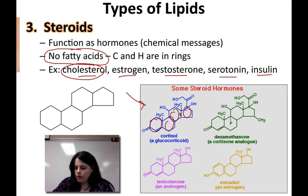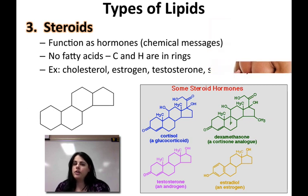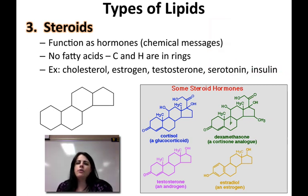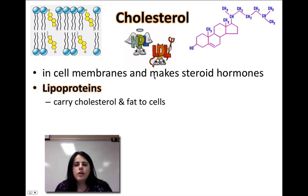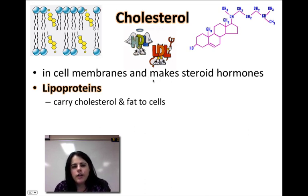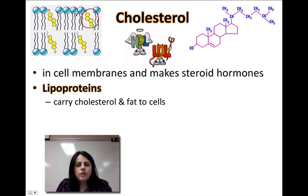Most of the time we think of steroids as anabolic steroids to build muscles, but that's only one type — there are many others inside your body, and that main one is cholesterol. Cholesterol is actually found in your cell membranes and makes all the other hormones. Cholesterol is a lipid, it doesn't like to be by water, and because of that it needs to be carried in your body by a little taxicab called a lipoprotein. Lipoproteins carry cholesterol and fat to all your cells. Your cells need cholesterol — in your phospholipid cell membrane, there's cholesterol stuck inside it to keep it evenly spaced.